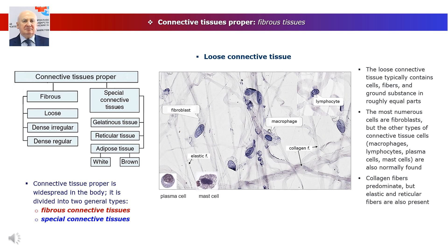Different combinations and densities of cells, fibers, and other extracellular matrix components produce graded variations in histological structure within connective tissues. Connective tissue proper is widespread in the body and is divided into two general types: fibrous connective tissues and special connective tissues. Fibrous tissues are broadly classified as loose or dense — terms that refer to the amount of collagen present.